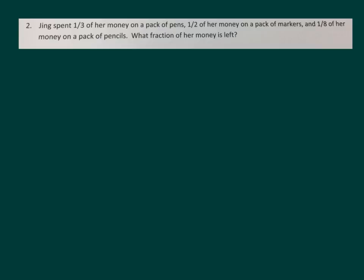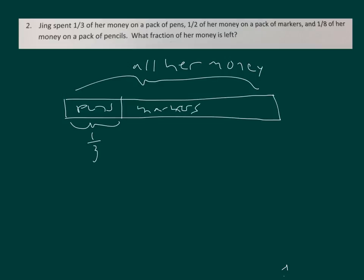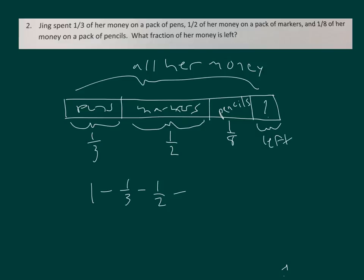Again, we can draw a fraction bar to represent our problem. Draw a bar representing all of her money. Pens was one-third, markers was one-half, and we also had one-eighth of our money on pencils. Then we have what is left. So we have one minus one-third, minus one-half, minus one-eighth as our question.